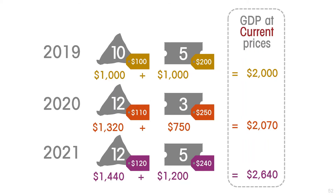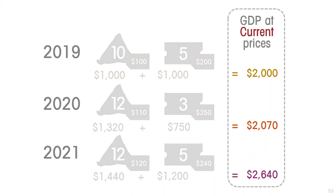We don't know if this economy is actually producing a greater volume of goods and services, or if it's producing the same volume but simply charging more for them. So if we want to know whether the amount of production has grown and by how much, then we can't use GDP at current prices — the increases in 2020 and 2021 don't give us any useful information.